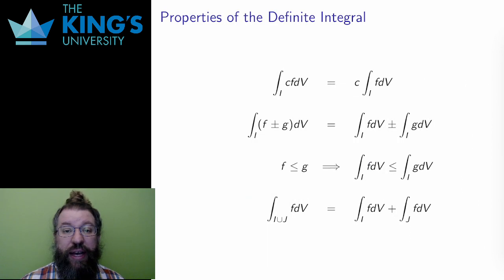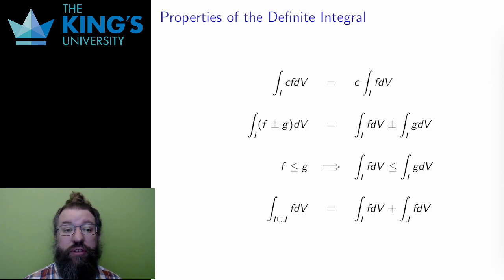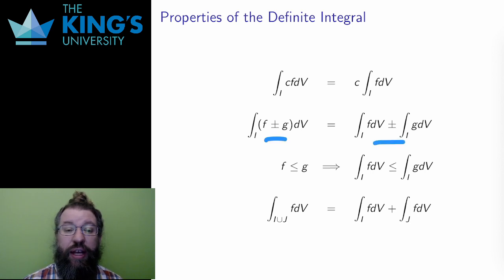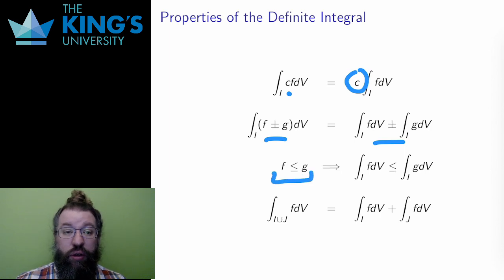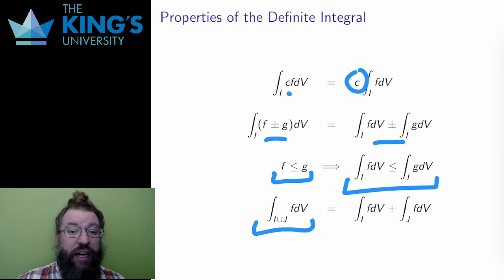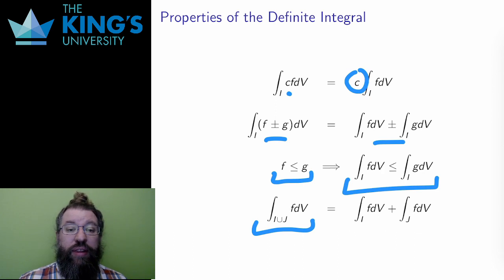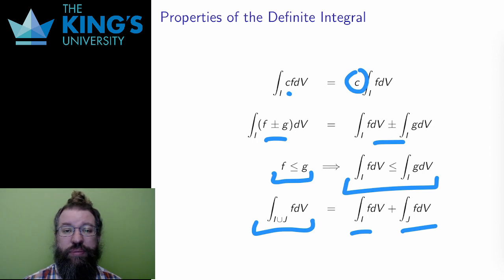The definite integral is defined in a very similar way to the single variable integral. It is a limit of a sum that defines an approximation. Unsurprisingly, it has most of the same properties. First, it is linear: it splits up over addition and subtraction, and any constants can be factored out. If one function is larger than another over the whole interval, then the integrals of those functions have the same relationship. Finally, if two intervals i and j are disjoint — they don't share any points other than maybe their boundary — then the integral over the union of the two intervals is the sum of the two integrals.